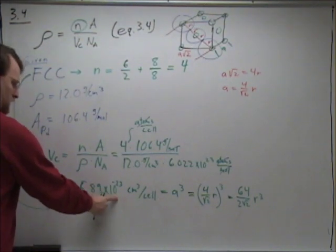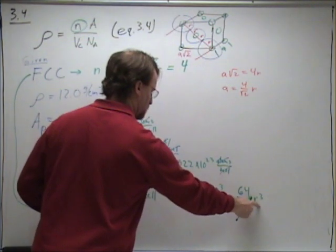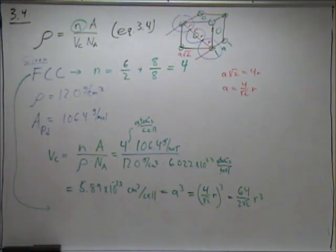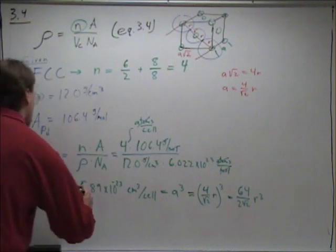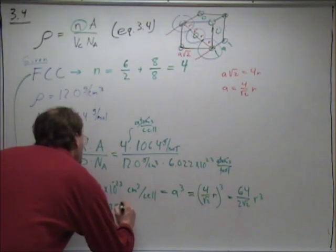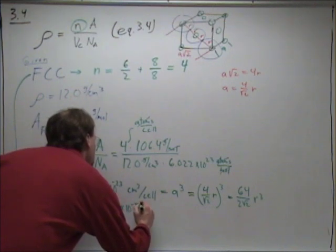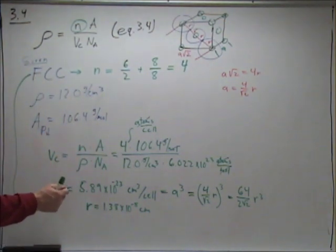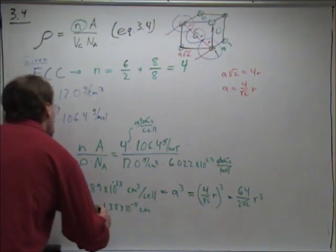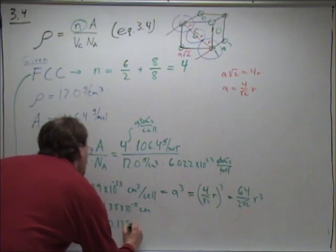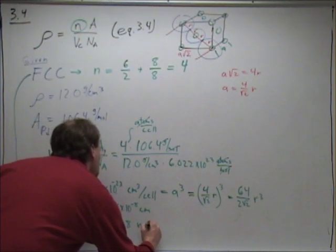Now we know the volume in terms of r, so we solve for r. The result is r equals 1.38 times 10 to the negative 8 centimeters. Since a nanometer is 10 to the negative 7 centimeters, this equals 0.138 nanometers.